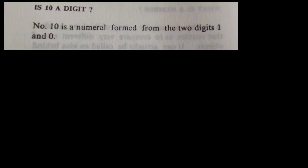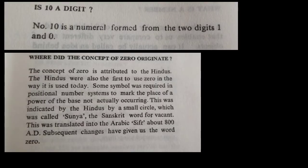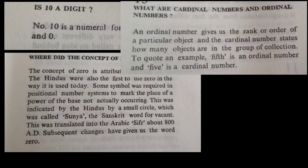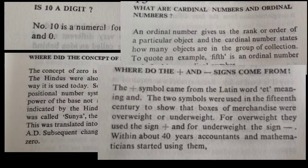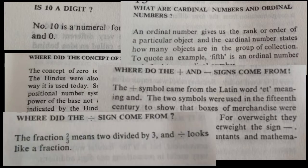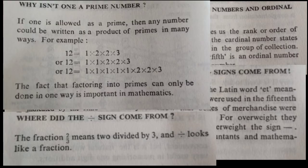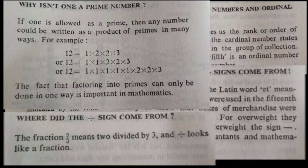Questions like is 10 a digit or not? Where did the concept of zero originate? What are cardinal and ordinal numbers? Where do the plus and minus signs come from? These are all questions. The host of division sign. Then why is one not a prime number? The perfect logic is explained here in this book, which I think not in every book is given.